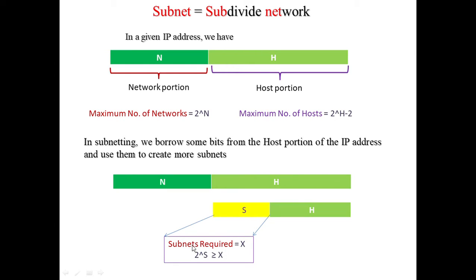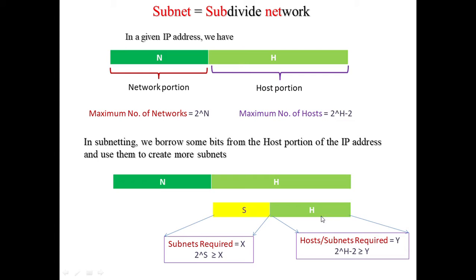If the number of subnets required is x, then we select the number of bits s for subnets such that 2 raised to the power s must always be greater than or equal to x. Similarly, for h — how many bits we select for hosts — this depends on how many computers within a single subnet we need. If that number is y, then we select h such that 2 raised to the power h minus 2 is greater than or equal to y.